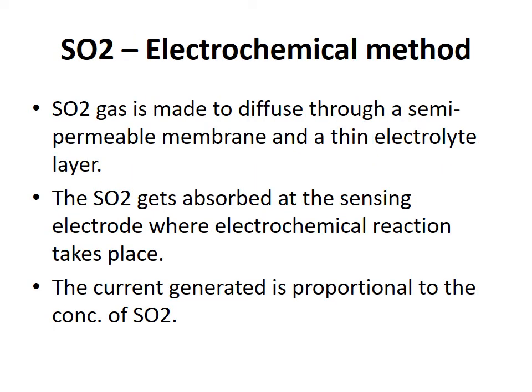The next method for SO₂ analysis in stack gases is the electrochemical method. The SO₂ gas is made to diffuse through a semi-permeable membrane and a thin electrolyte layer. The sulfur dioxide gets adsorbed at the sensing electrode where the electrochemical reaction takes place, and the current generated is proportional to the concentration of sulfur dioxide.